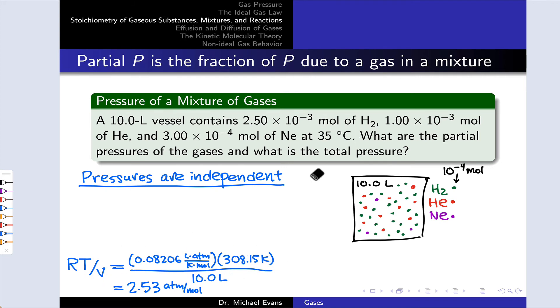In this particular problem, 35 degrees C, 308.15 Kelvin, and at 10 liters, that comes out to 2.53 atmospheres per mole. So that's a pressure per mole.